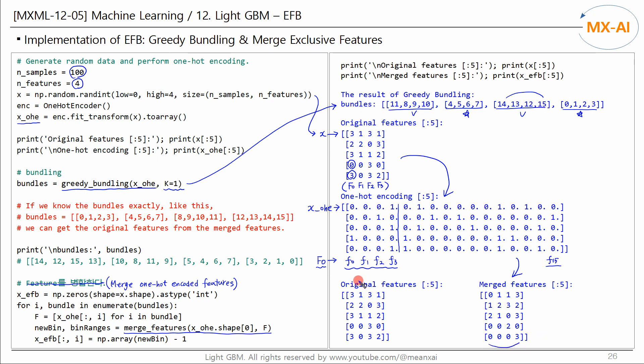Compared to the original feature values, they are not exactly the same. Since the second and fourth bundles are correct, the second feature is correctly restored to its original feature.